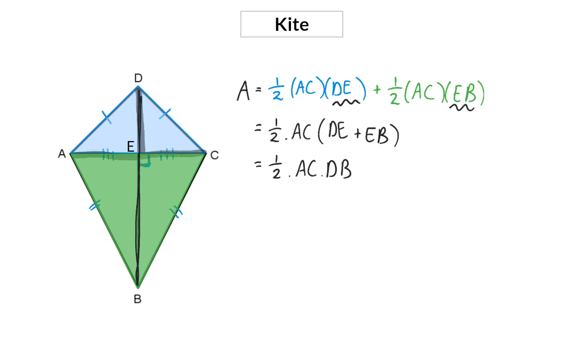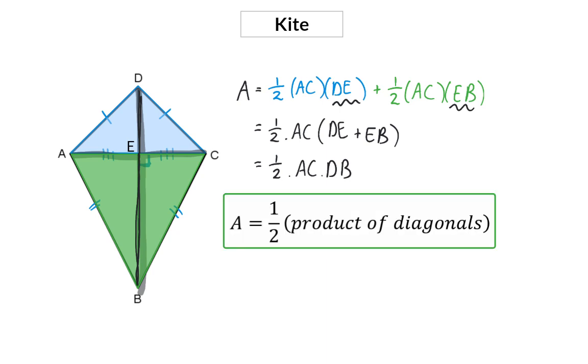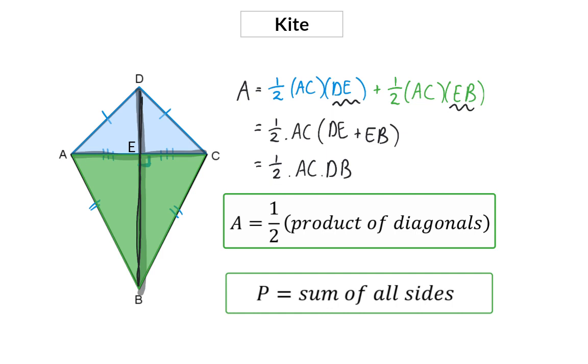AC and DB are the two diagonals of this kite, and that is why we can say that the formula for the area of a kite is a half times the product of the diagonals. The perimeter of a kite is still, like with any other polygon, the sum of the sides.